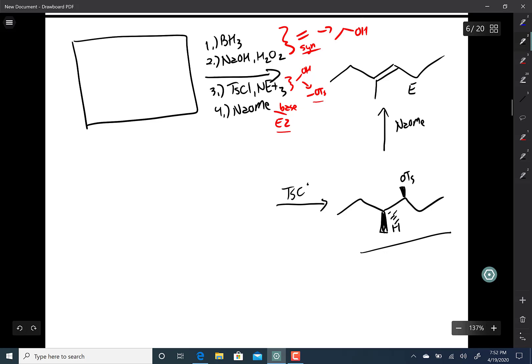So tosyl chloride in triethylamine takes alcohols and makes them into tosylates, and it doesn't change that stereochemistry at all. So you would have this.